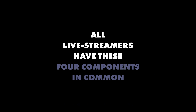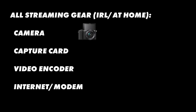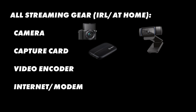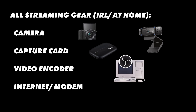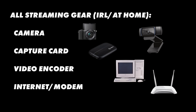All live streamers have these four components in common: a camera, a way to capture the video, a video encoder, and a way to send the video over the internet. For example, someone who live streams from home with their computer might have a mirrorless camera, an Elgato capture card, or a webcam that does both. They might stream with OBS Studio where you can change the video encoder settings, and they're connected to the internet with a cable — and definitely not Wi-Fi.